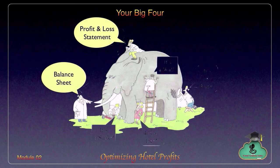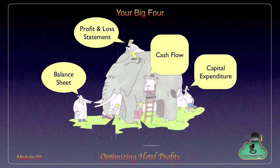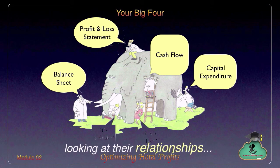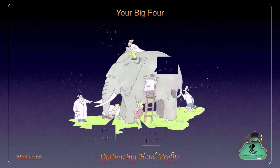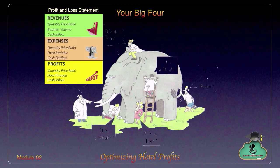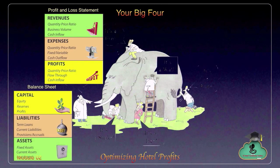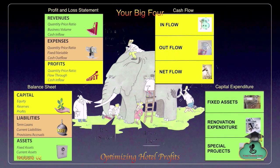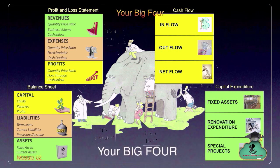Each of these financial statements plays a role, and looking at them individually will be like the blind men touching individual parts of the elephant's body and arriving at incorrect conclusions. This method is known as the big picture overview. The power in your decision making comes from looking at your big four together, seeing relationships among them, and harnessing those relationships. It is what will empower you to optimize profits in your operation. This is your big four — go and optimize profits in your operation.